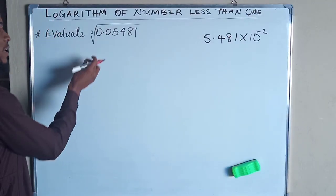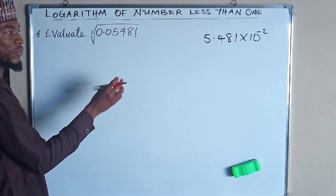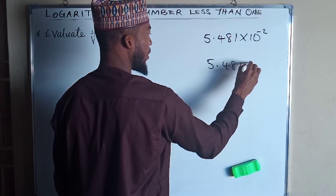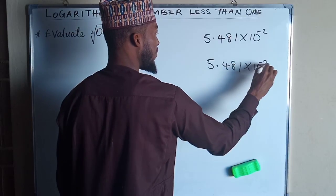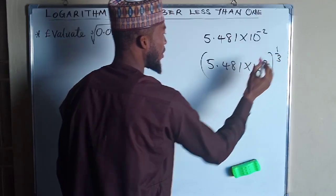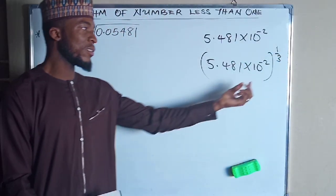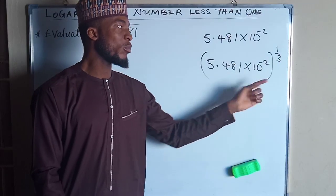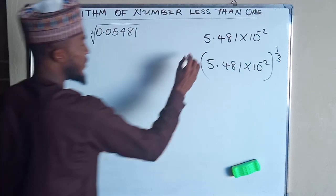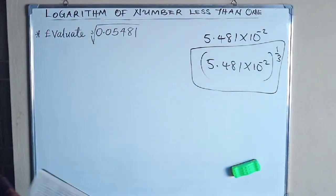That's the first thing. Then use laws of indices to also transform the cube root, so that you have something like this: 5.481 times 10 raised to the power of negative 2, all raised to the power of 1 over 3. Because from the law of indices, a cube root of a number is the same thing as that number raised to the power of 1 over 3. Then you are free to look for the real values under your log table.